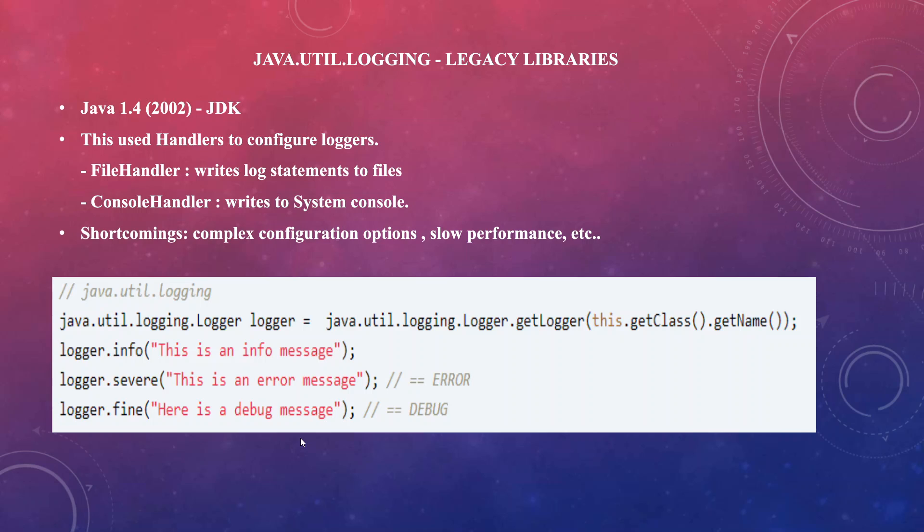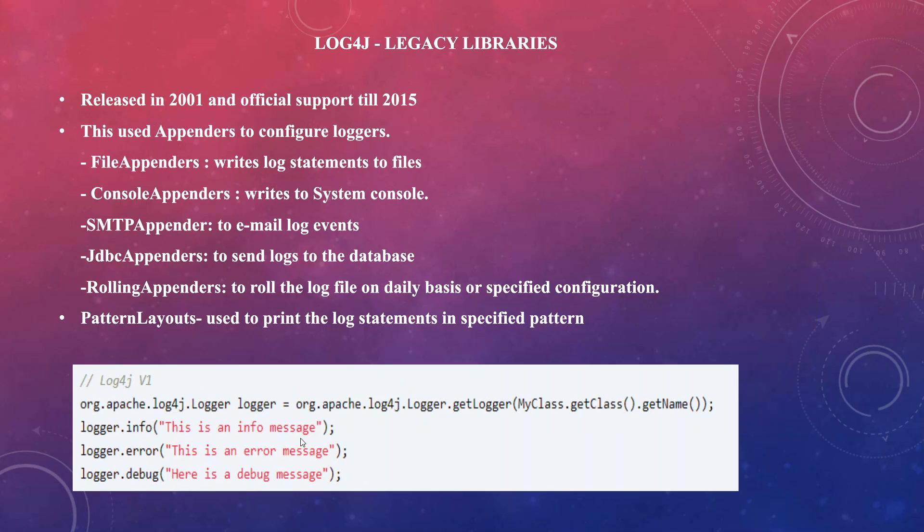With those disadvantages — complexity, poor performance, and inconsistent API naming — people started thinking of alternatives. Developers started using Log4j, which was released in 2001 and had official support until 2015.